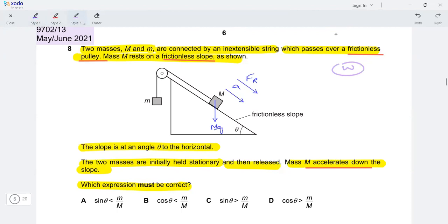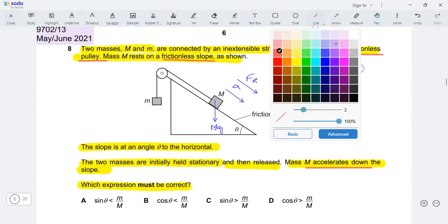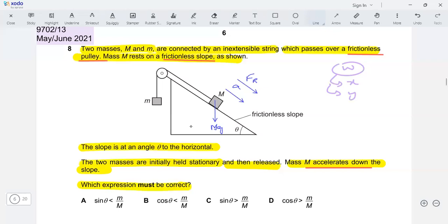Now, since this is a slope, remember, on a slope, you need to resolve the weight into its components, the x and y components. And how to do that? The two components must be, one of them must be perpendicular to the slope and the other one must be parallel to the slope.